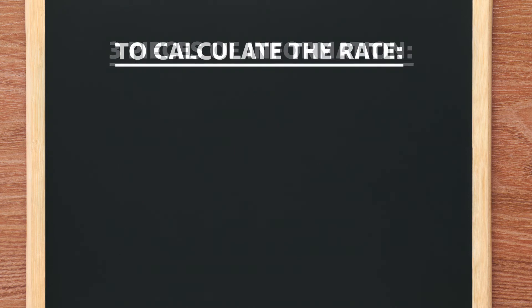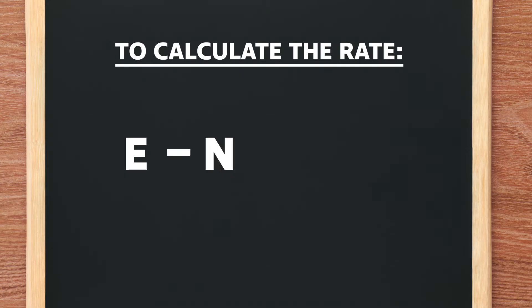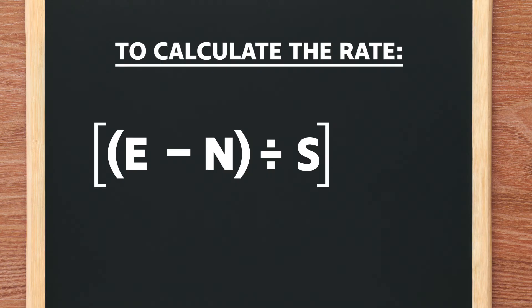To calculate the rate, first subtract the number of new customers added over that period of time — represented by the letter N — from the total number of customers at the end of that same period of time, represented by the letter E. That's E minus N. Then divide that number by the number of customers at the start of the period of time, represented by the letter S. Finally, multiply that number by 100 and you'll have the percentage of customers who stay.